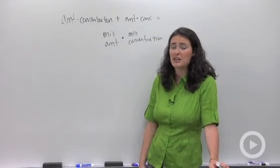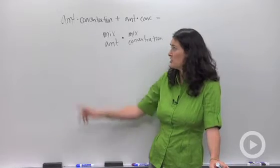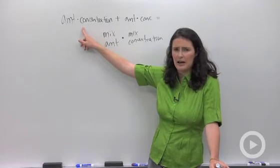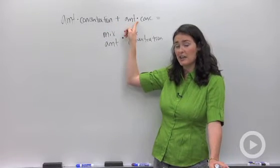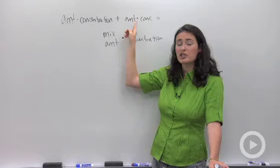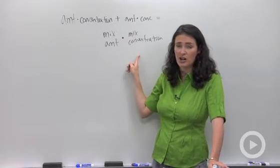You're going to take the amount times the concentration of your first ingredient—I'm abbreviating amount by the way to AMT—plus the amount times the concentration of your second ingredient, and that's going to equal your mixture amount times your mixture concentration.